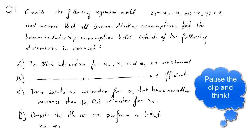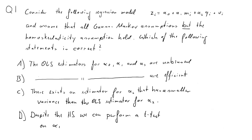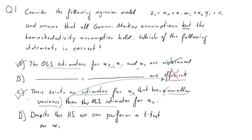Pause the clip and think. Here are the answers. A: The OLS estimators are still unbiased despite heteroscedasticity — we discussed that. B: The OLS estimators are not efficient anymore. C: There exists an estimator for alpha_2 with smaller variance than the OLS estimator — that smaller variance indicates another estimator may be efficient, and indeed such an estimator exists: the GLS estimator.